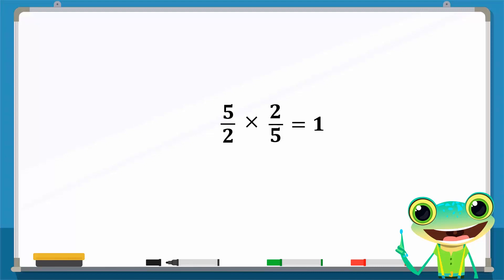Generally, to find the reciprocal or multiplicative inverse of a number, we simply turn it upside down. The numerator becomes the denominator and the denominator becomes the numerator.